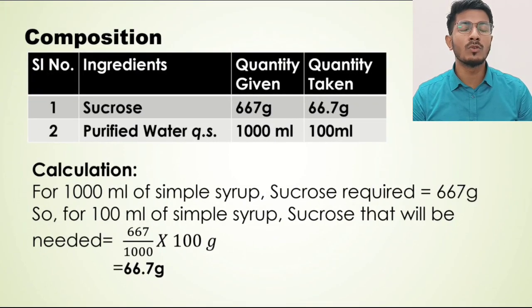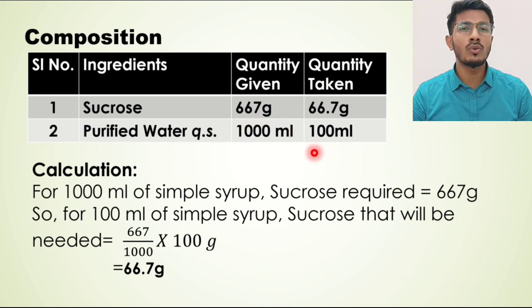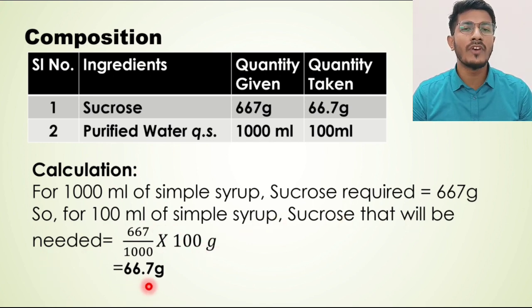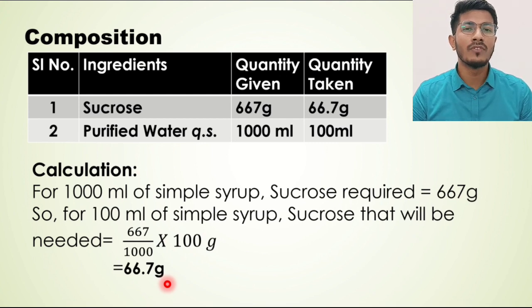Now we have to do the necessary calculations. The working formula is given for 1000 ml, but we are not going to prepare 1000 ml — we are doing the preparation for 100 ml. Since for 1000 ml we need 667 grams of sucrose, we have to calculate how much sucrose will be required for 100 ml. After calculation, you will find that it is 66.7 grams for 100 ml.